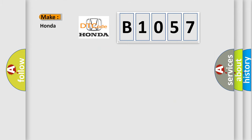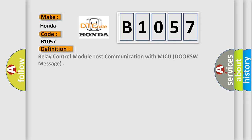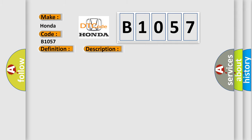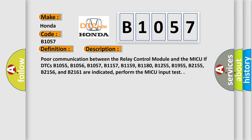So, what does the diagnostic trouble code B1057 interpret specifically for Honda car manufacturers? The basic definition is: Relay control module lost communication with MICU, DORSW message. This is a short description of this DTC code: poor communication between the relay control module and the MICU, if DTCs B1055, B1056, B1057, B1157, B1159, B1180, B1255, B1955, B2155, B2156, and B2161 are indicated. Perform the MICU input test.